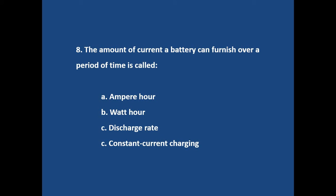Question number 8. The amount of current a battery can furnish over a period of time is called? Answer is option A. Ampere hour.